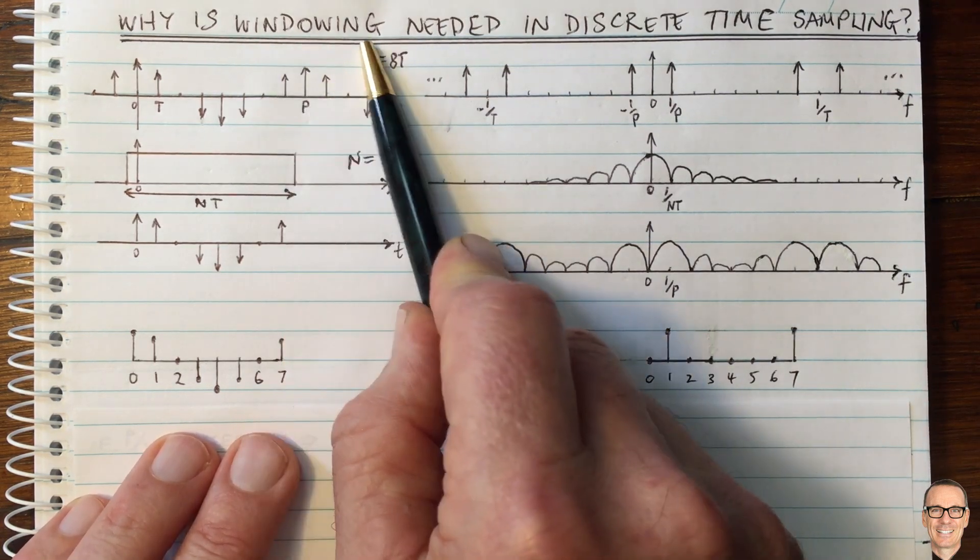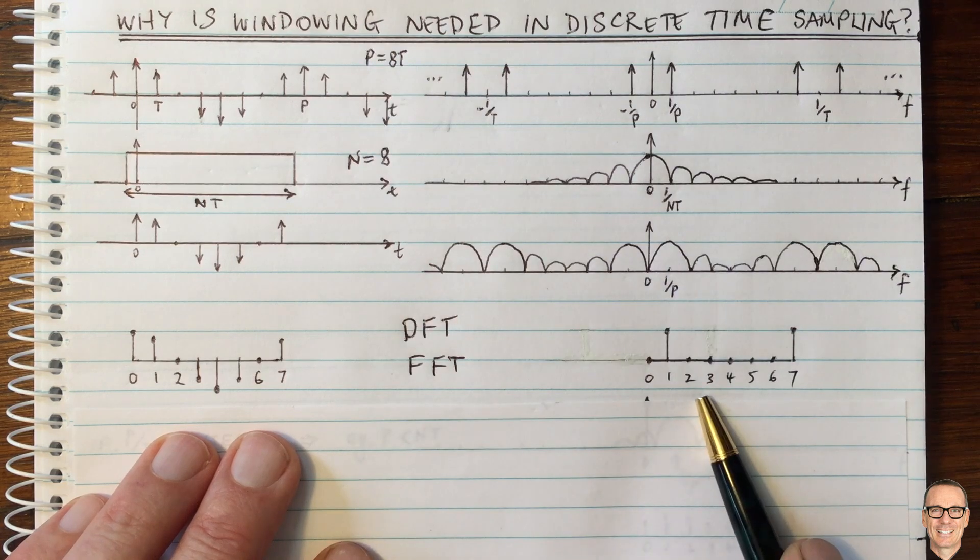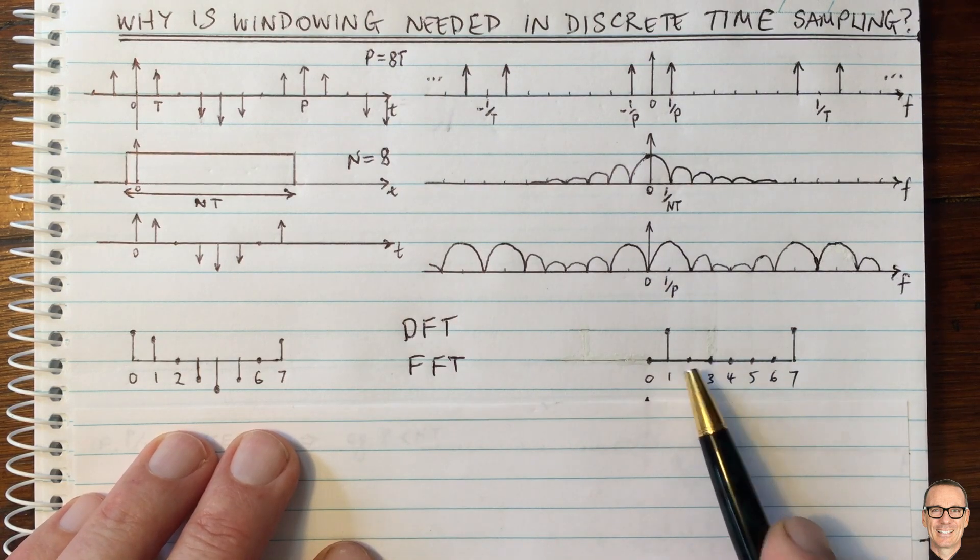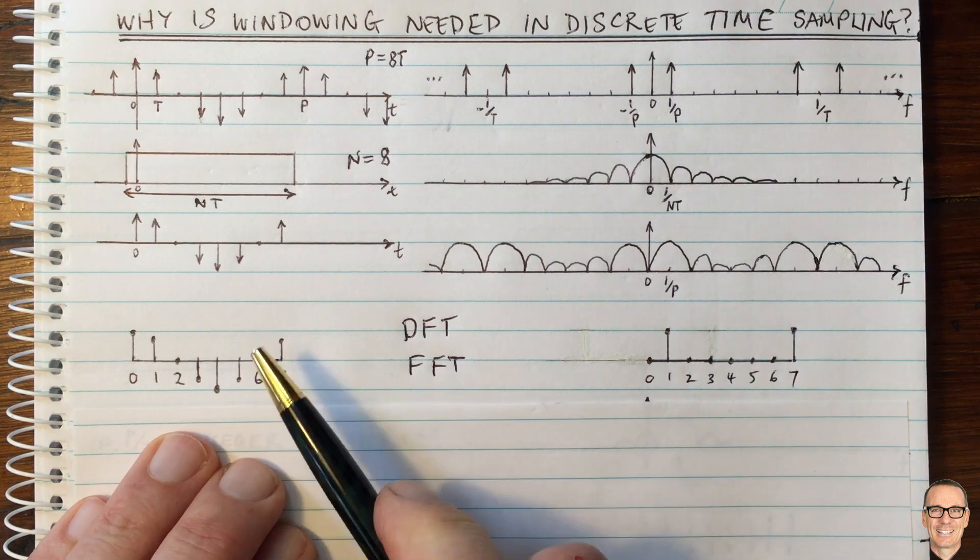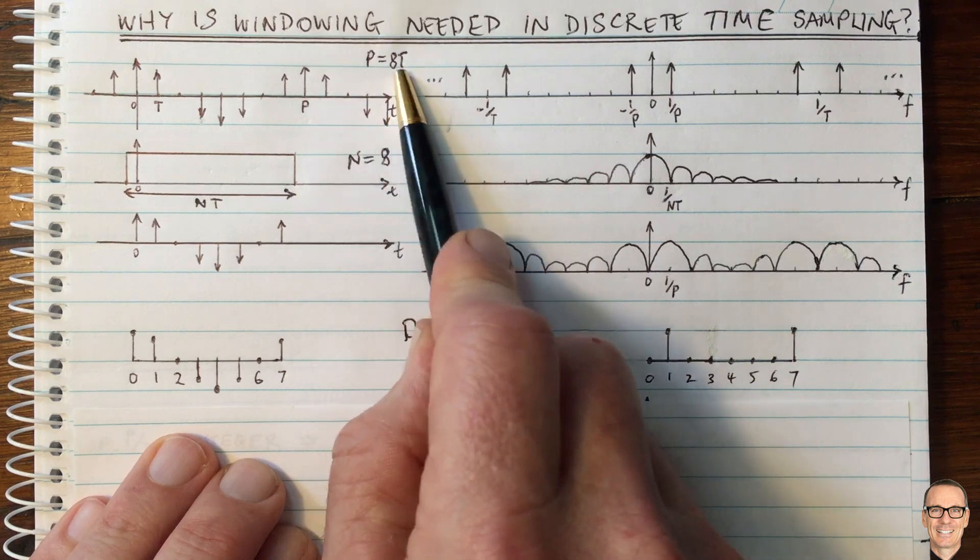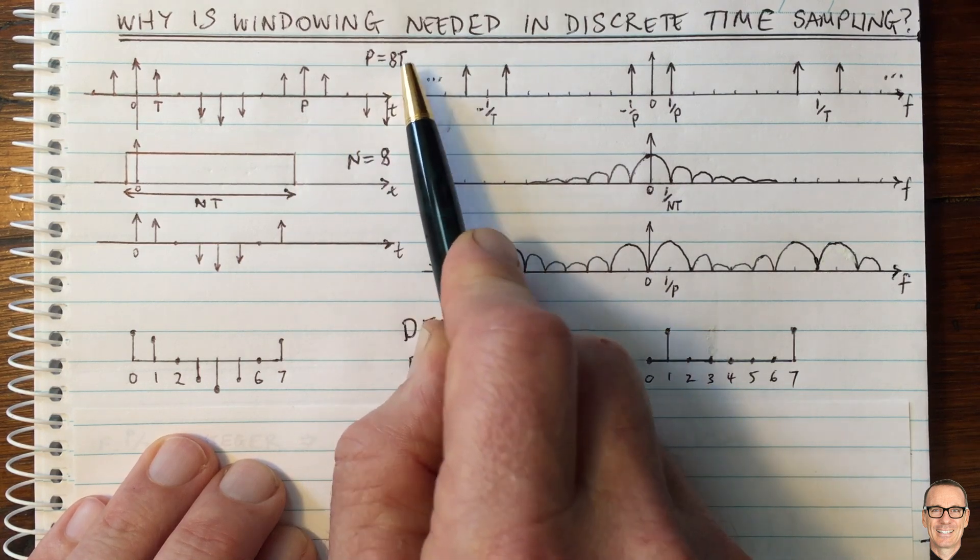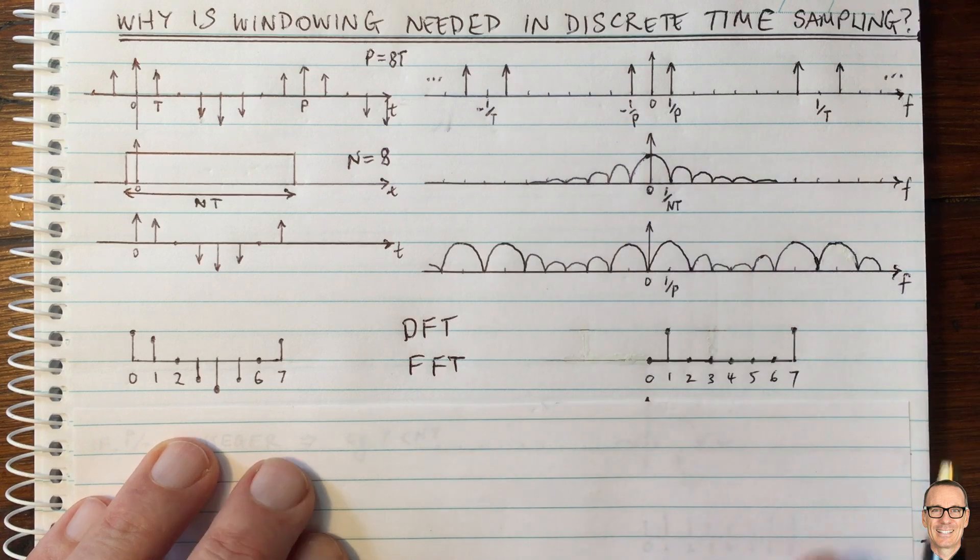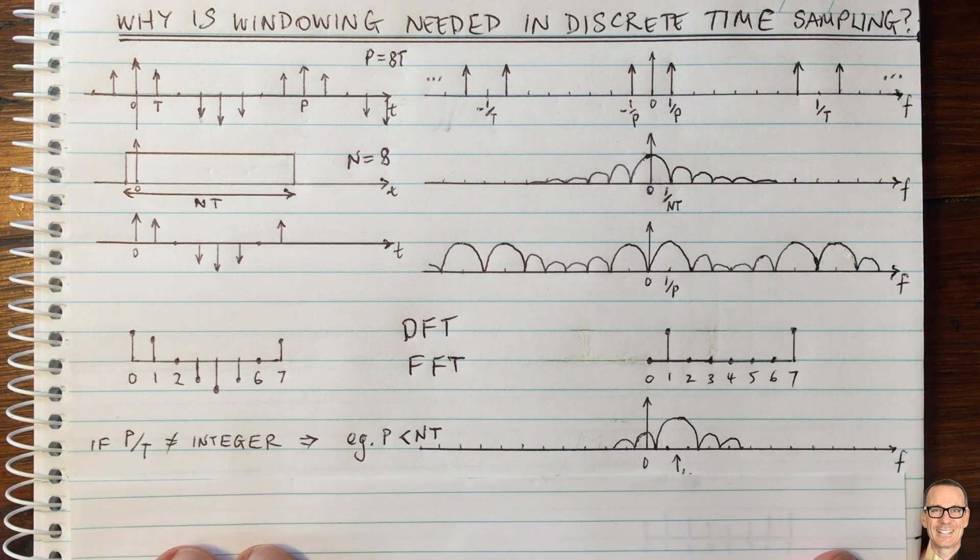Why do we need different types of windowing shapes? To see this, let's consider a scenario where I haven't chosen P to be exactly an integer multiple of capital T.